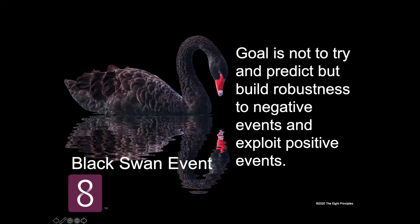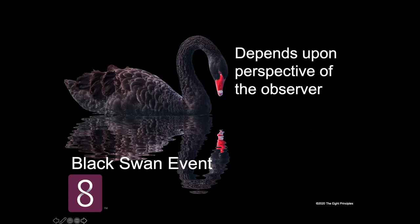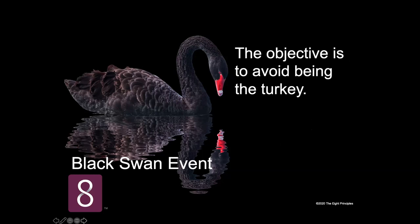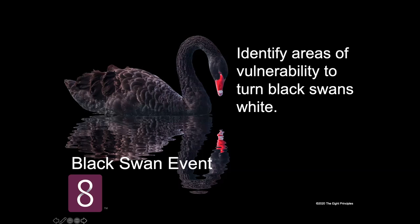A black swan depends on the perspective of the observer. A surprise for a turkey is not a black swan for its butcher — it's a white swan for the butcher. So the objective is to avoid being the turkey. You want to be the butcher — the one who exploits the situation. You can't predict it or control it, but you can develop internal systems that exploit it and defend against it. We're talking about identifying areas of vulnerability that turn your black swans to white ones.